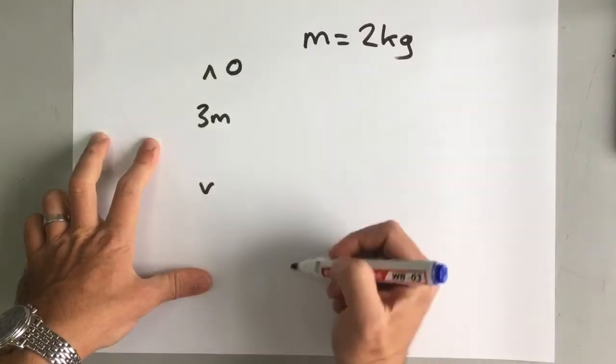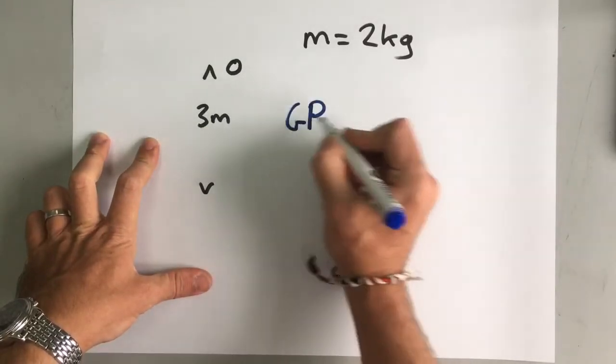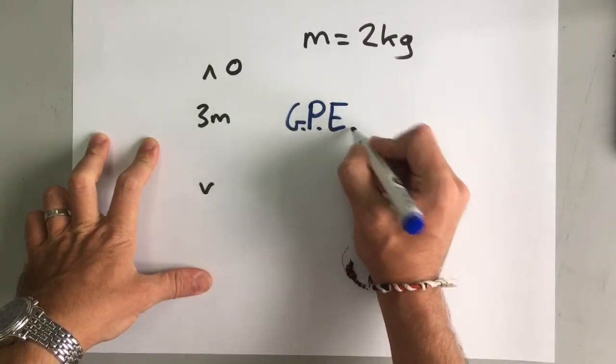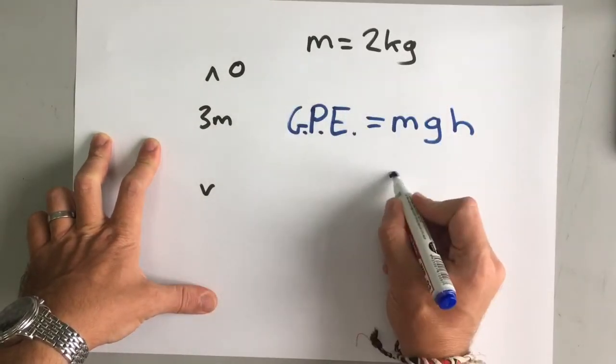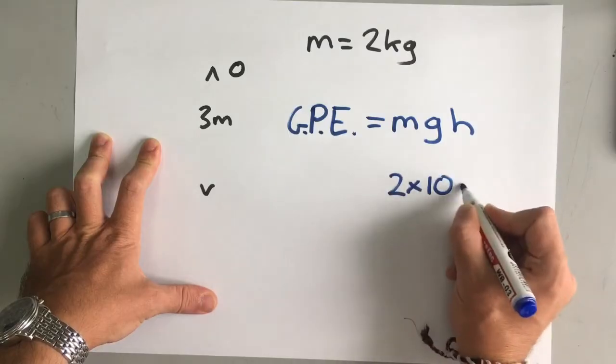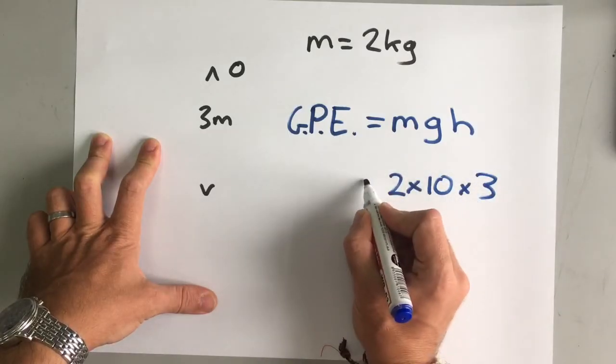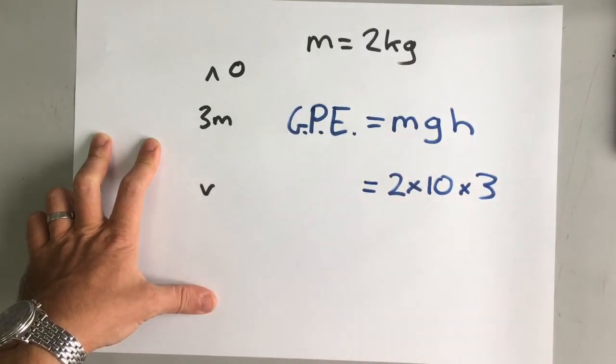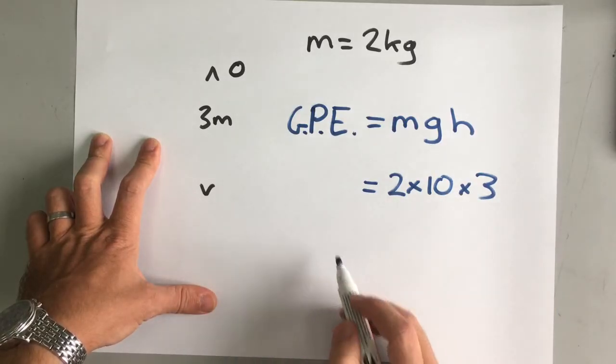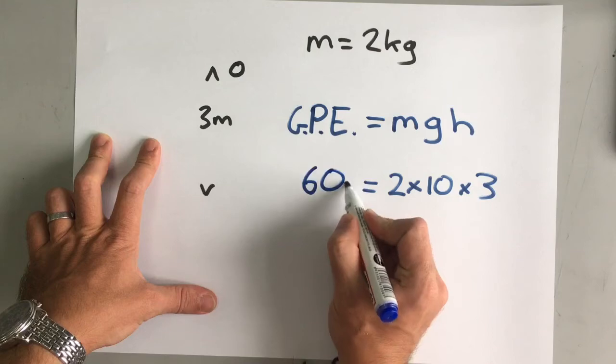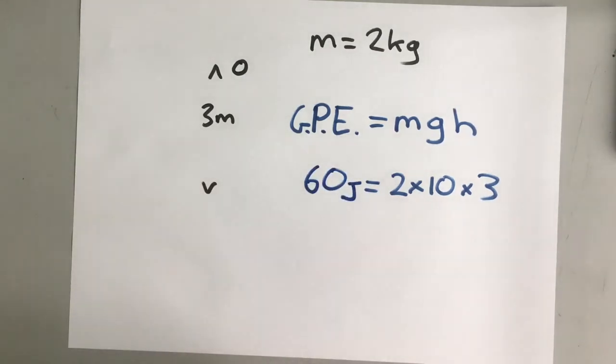First of all, it's at the top, so we know it's got gravitational potential energy. And we know that's mass times gravity times height. The mass is two kilograms, gravity is ten, and the height is three meters. So, gravitational potential energy is two times ten times three, which is 60 joules. It's got 60 joules of gravitational potential energy.